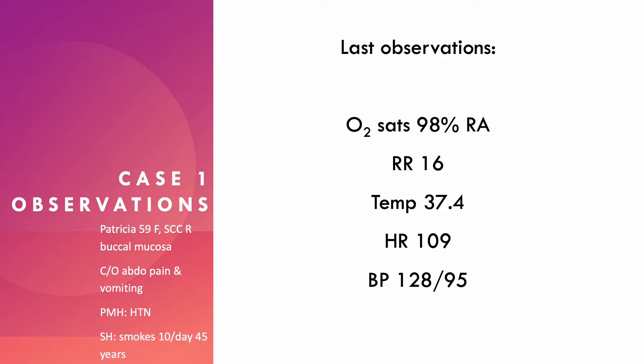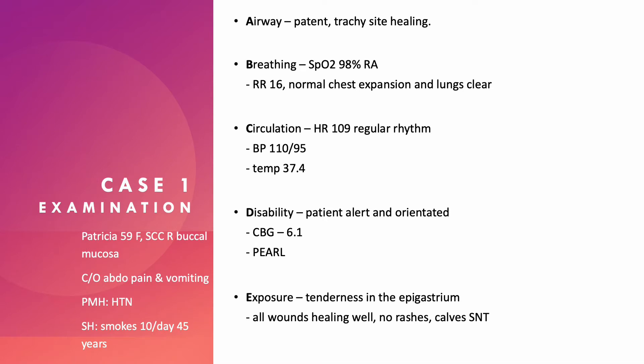For the most part these observations are normal, but she is tachycardic with a heart rate of 109. Her blood pressure appears normal, but we need to remember this patient has a past medical history of hypertension — so this blood pressure may actually be abnormal for her, meaning she may effectively be hypotensive.